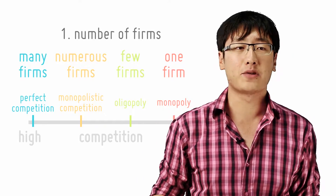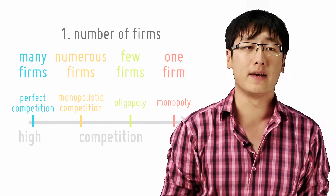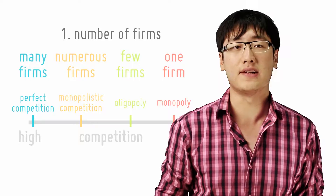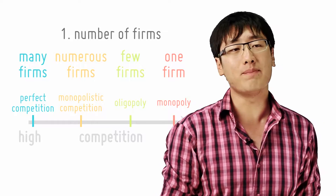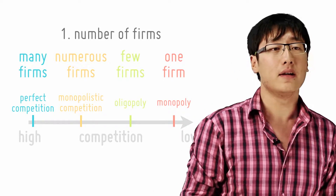From the spectrum of perfect competition to monopoly, there is a clear decrease in the number of firms. So it is a very important indicator of the type of market.